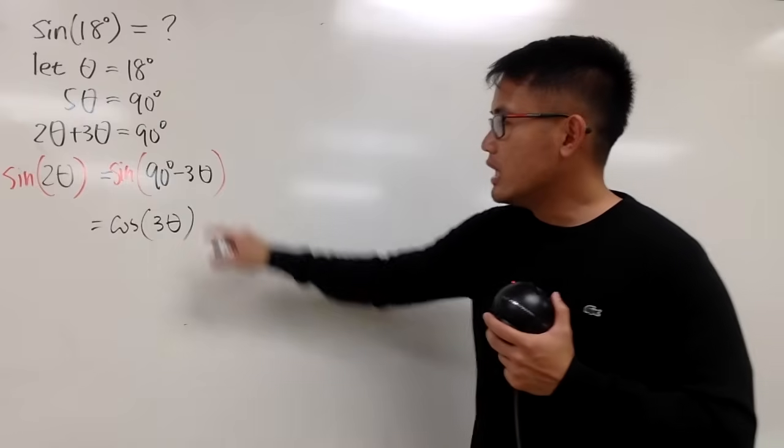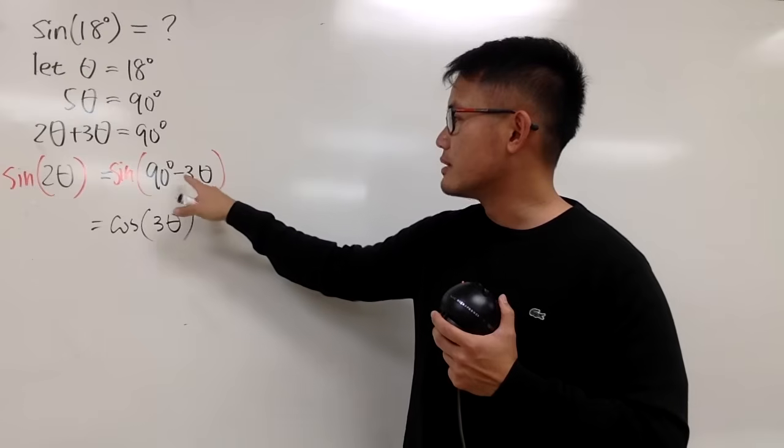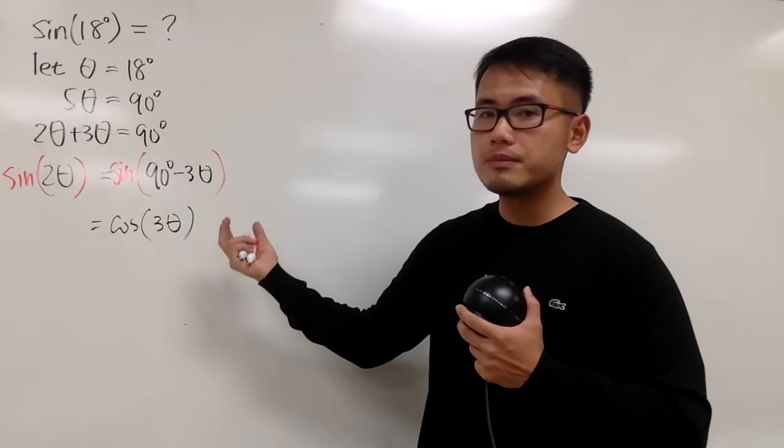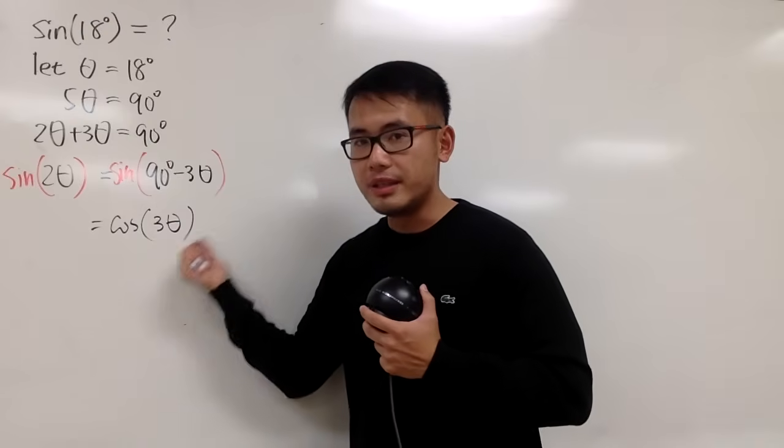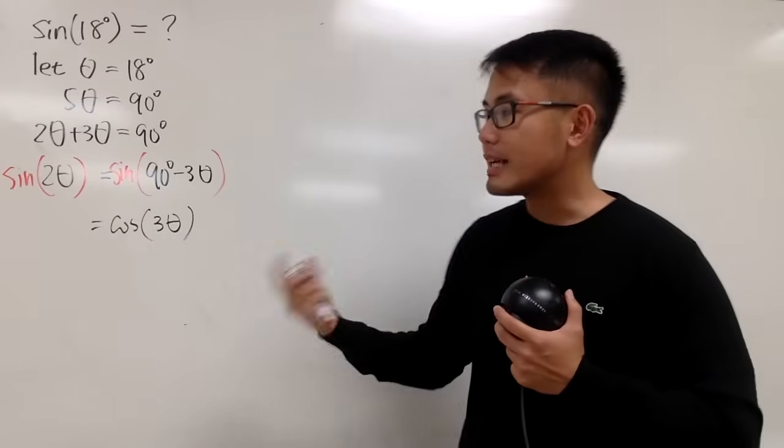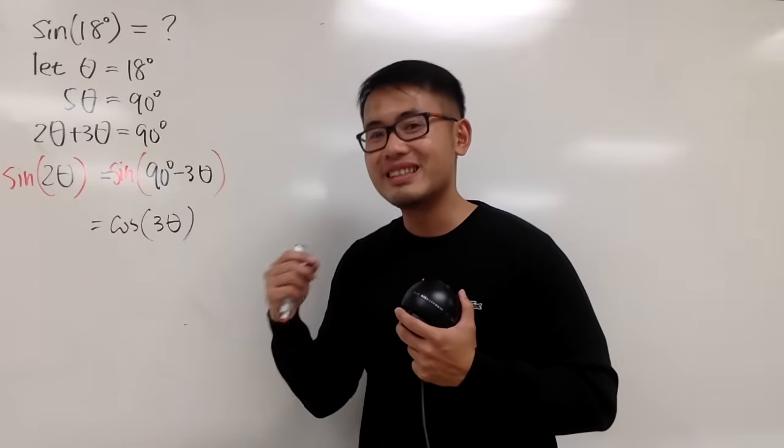And the reason being is that if these two angles add up to be 90, which they are, because negative 3 theta plus 3 theta is just 0, and we have the 90 degrees here. If the angles add up to be 90, then the sine and cosine of these values will be the same. That's why this is called the complementary sine function, cosine.